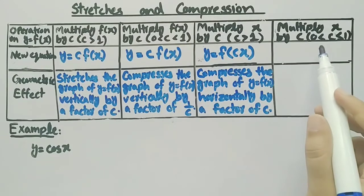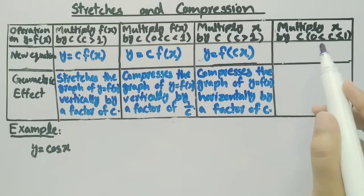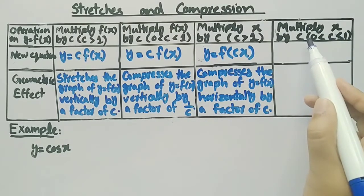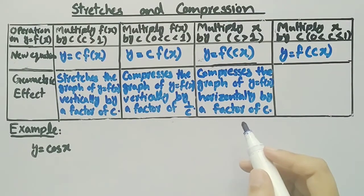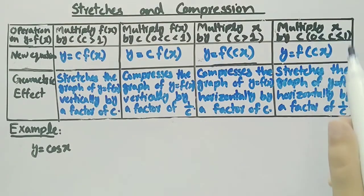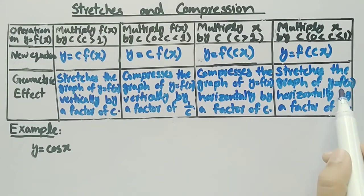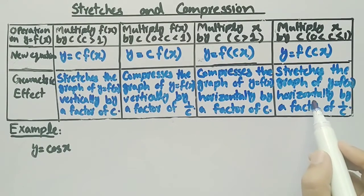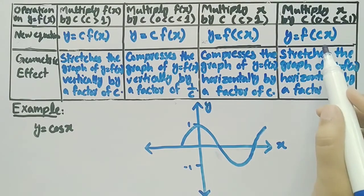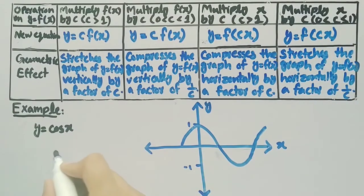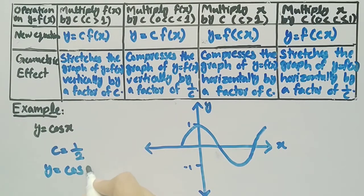The fourth and last operation is when we multiply x by c, where c is a constant between 0 and 1. The new equation that is formed is y = f(cx), and the geometric effect is that it stretches the graph of y = f(x) horizontally by a factor of 1/c. Applying this to our example with c = 1/2, the new equation will be y = cos((1/2)x).